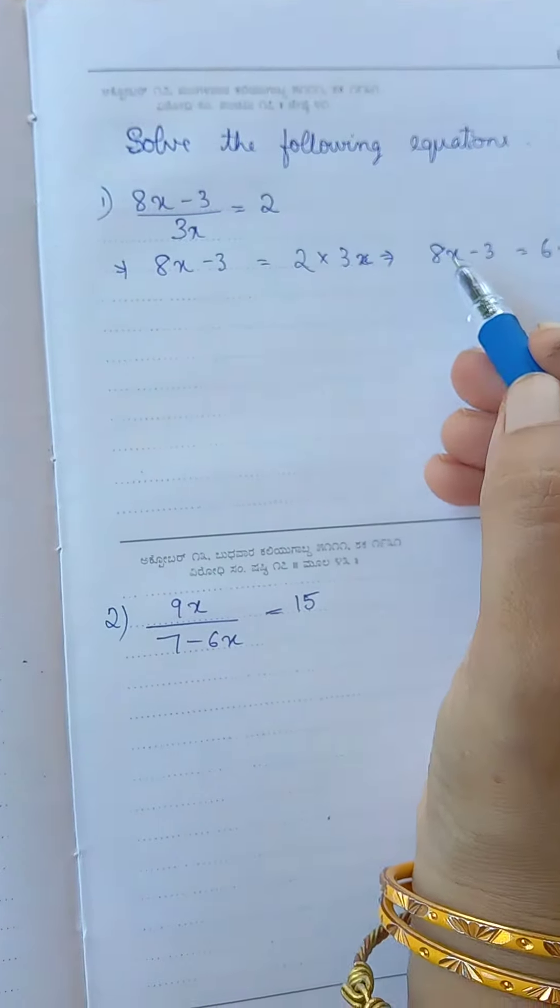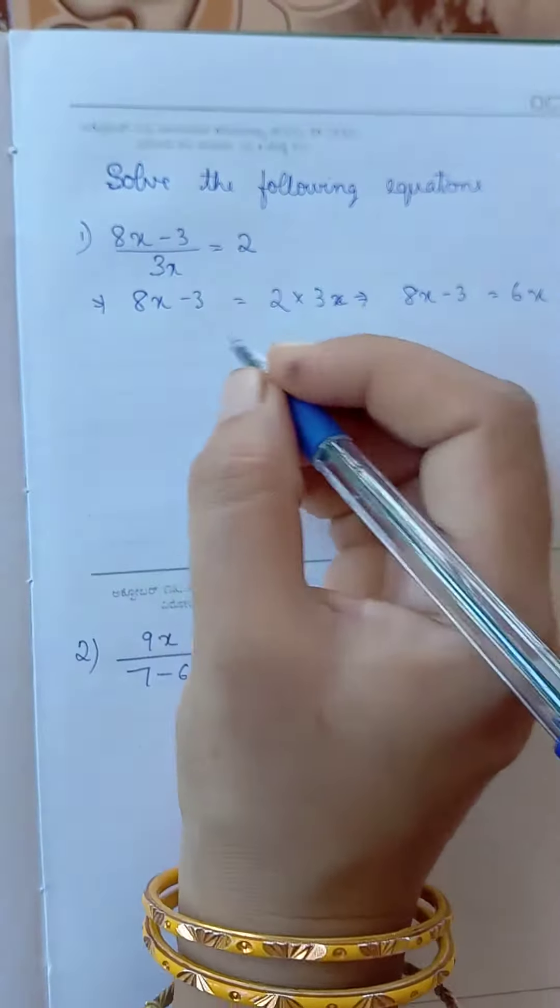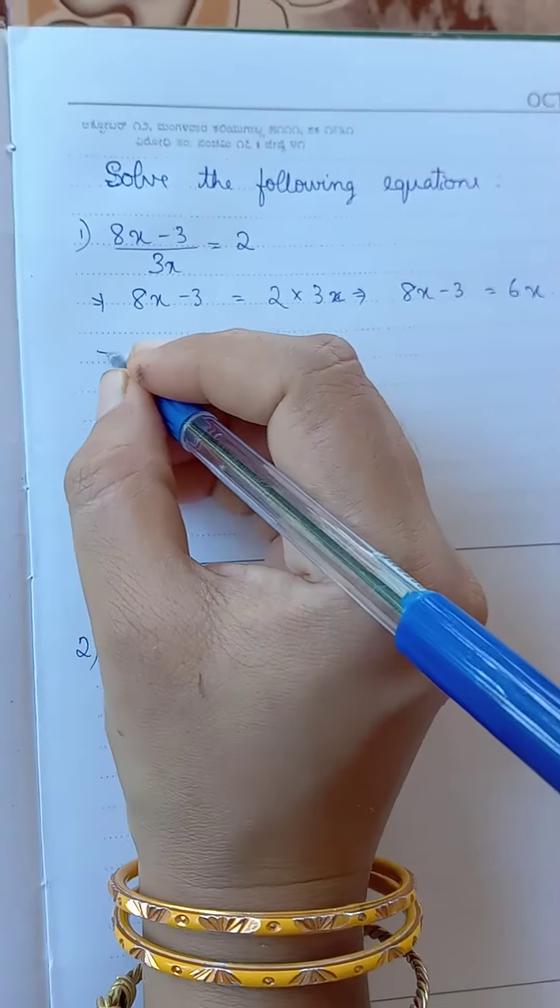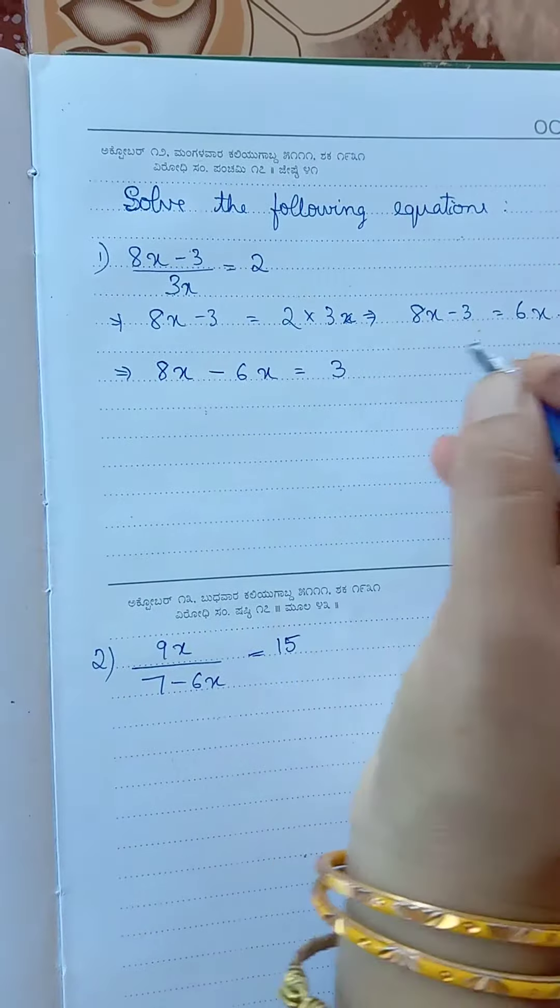Now move the x terms to one side and the constant to the other side. So 8x minus 6x equal to plus 3.